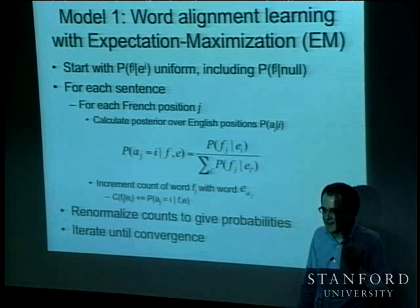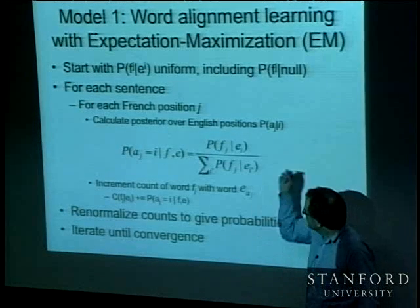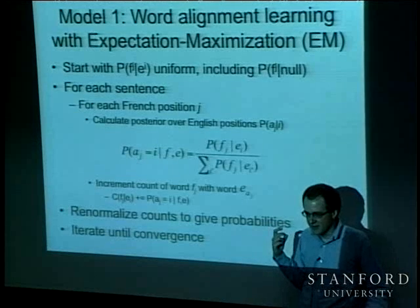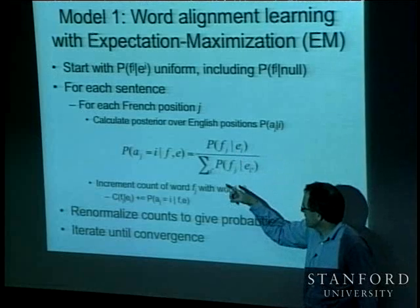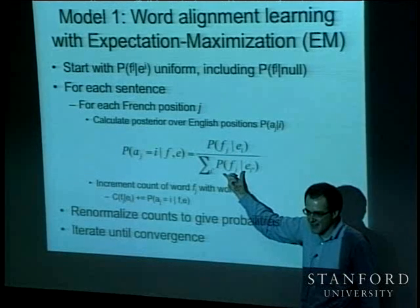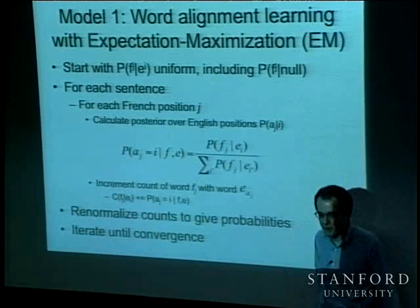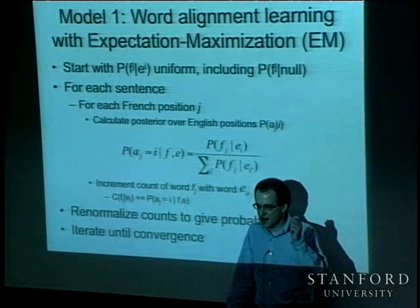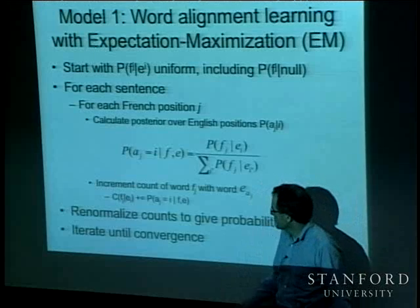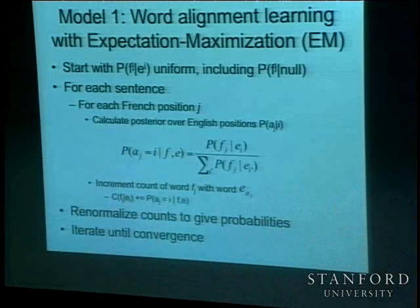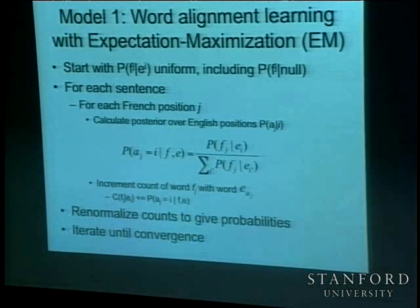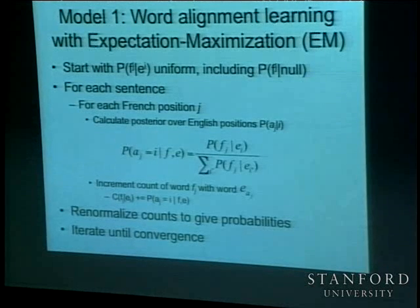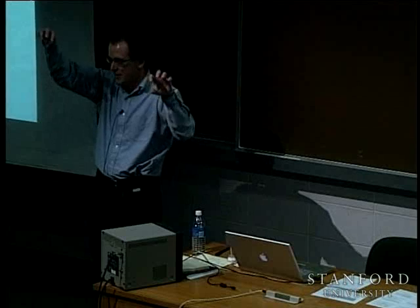You can extend up from that: if you get a two-word sentence, the first time around both possibilities have the same estimate because we started off uniform. So for each French word you're going to get half a chance that it aligns with each English word, and these counts are going to be a half. Effectively, the first iteration through, all you're doing is counting sentence co-occurrence counts scaled by the number of words in the sentence — if it's a 12-word sentence, you're counting a twelfth.